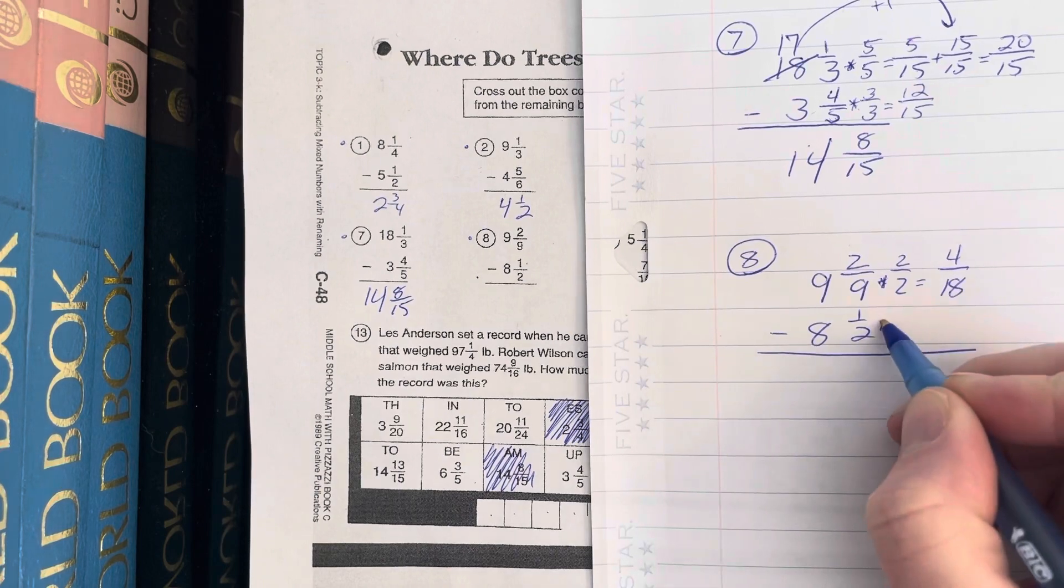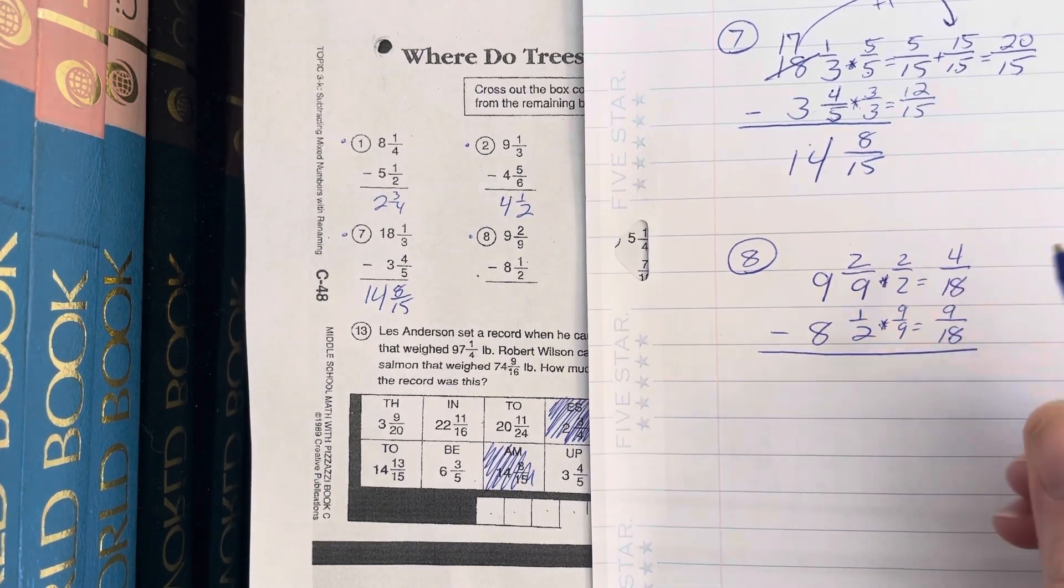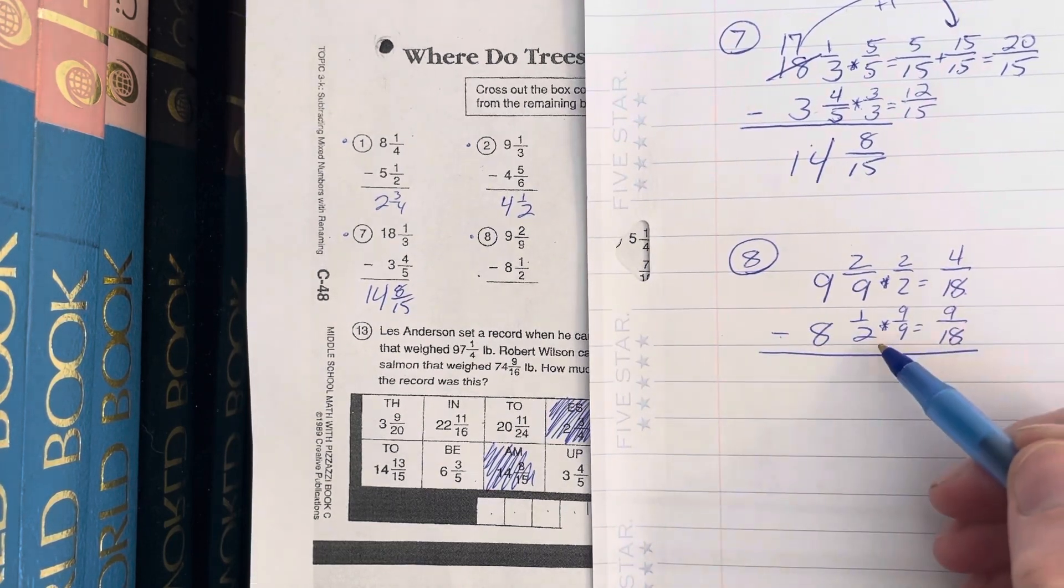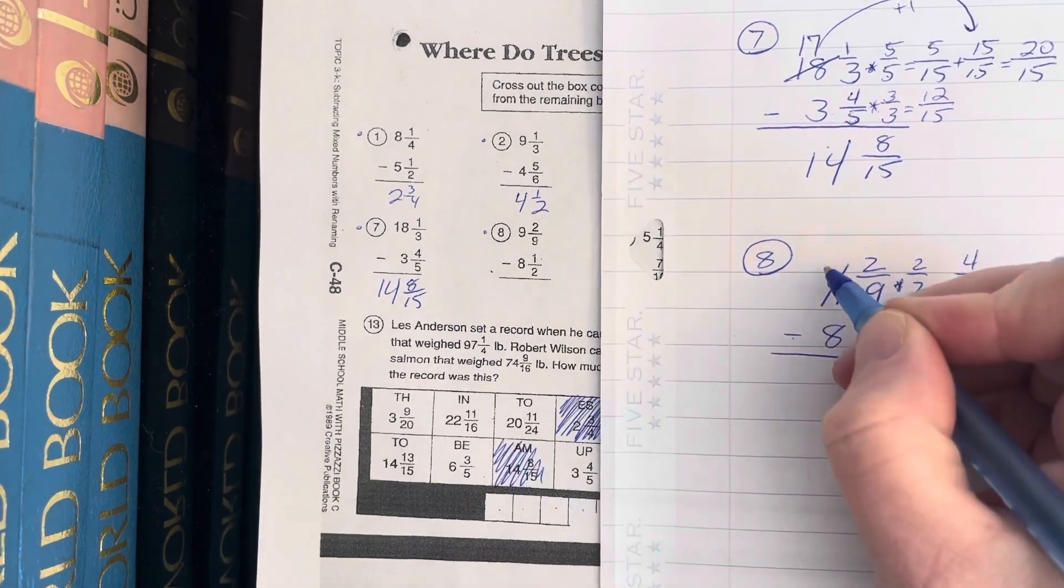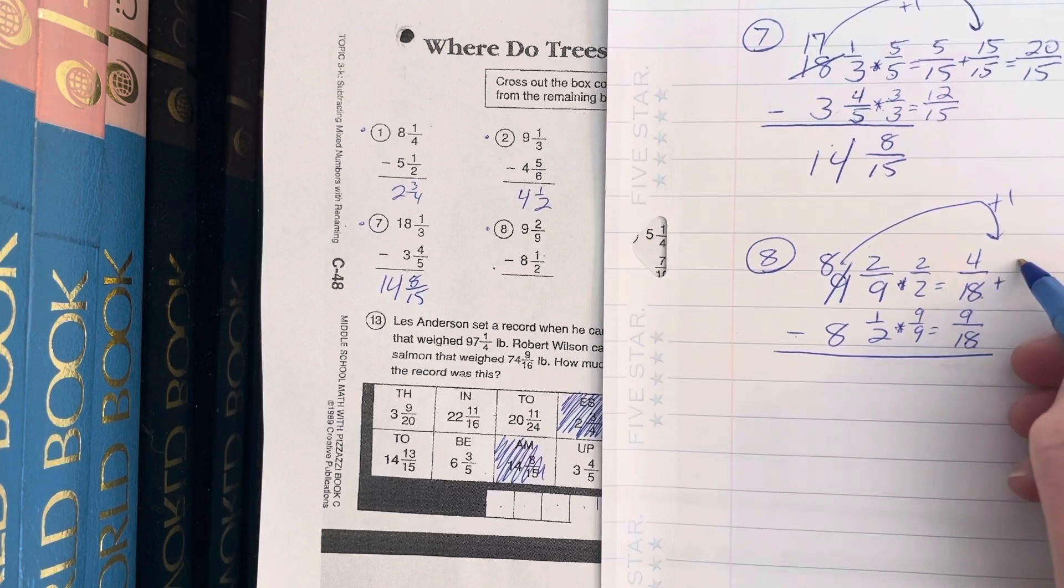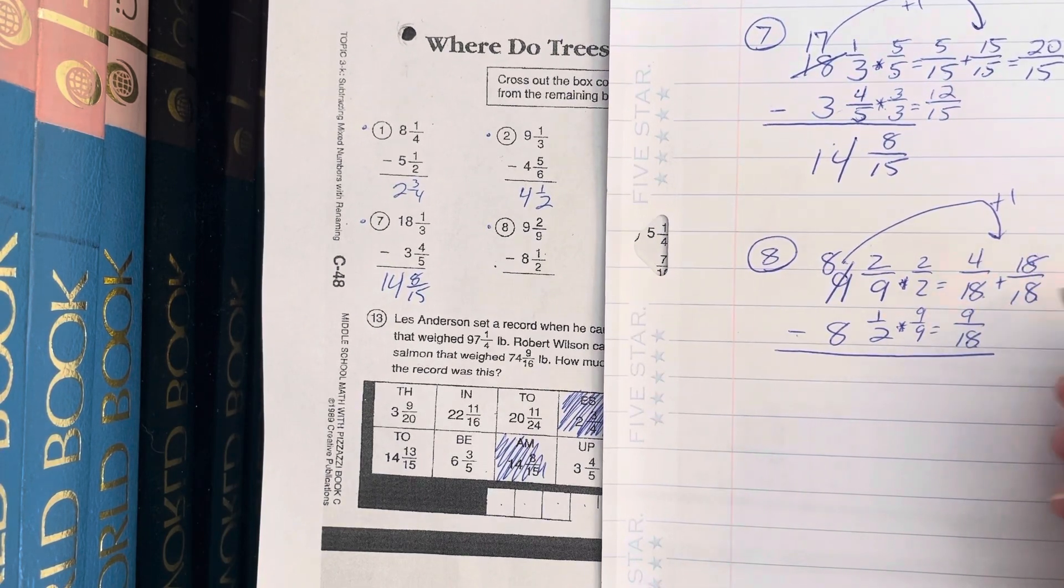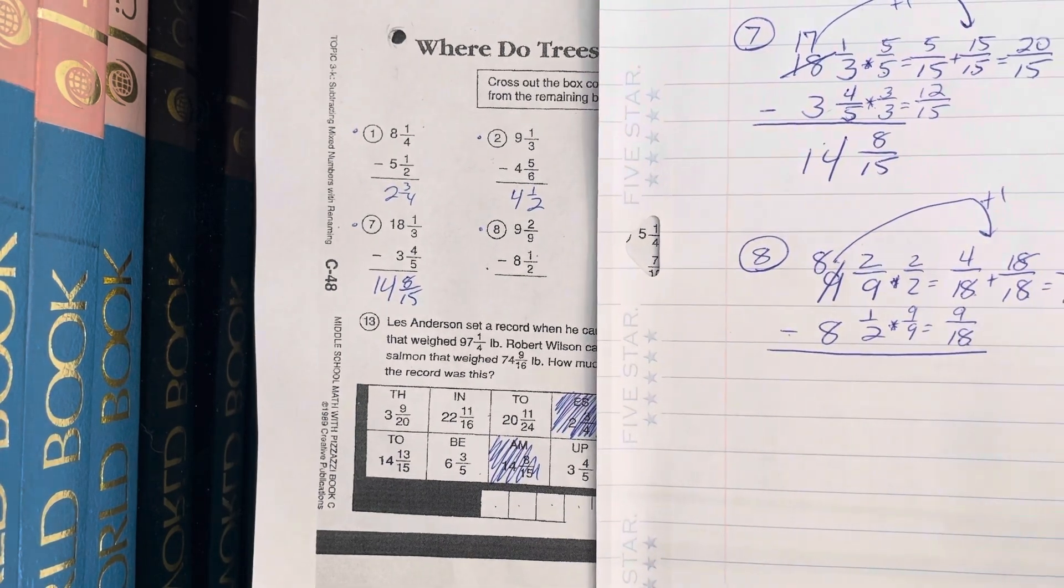And here I'm gonna multiply by 9/9, and I'm gonna get 9/18. 4/18 minus 9/18 - again, I can't have negative cake here. So I'm gonna take this cake, I'm gonna cut it up, I'm gonna give that whole cake over here. Its piece size is 18 out of 18; that would be a whole cake. That gives me 22 pieces at the piece size of 18.